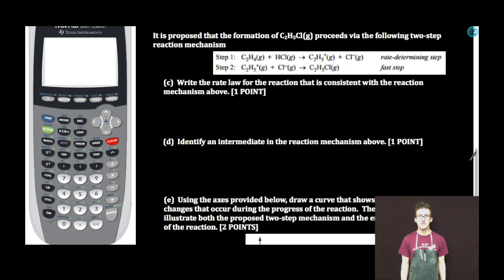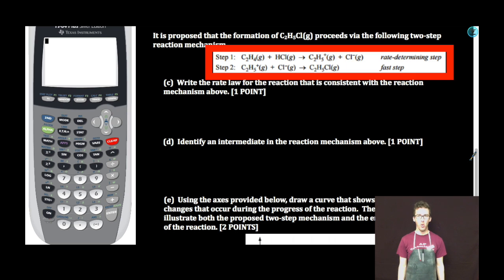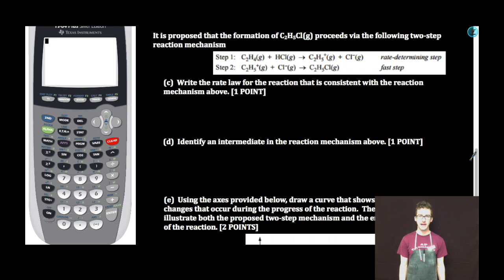It is proposed that the formation of C2H5Cl proceeds via the following two-step reaction mechanism. Part C. Write the rate law for the reaction that is consistent with the reaction mechanism above. What? I have no experimental data. How am I supposed to write the rate law for reaction without experimental data? Remember that when you're given the reaction mechanism, you can use the stoichiometry in the rate determining step, or the slow step, to write your rate law.